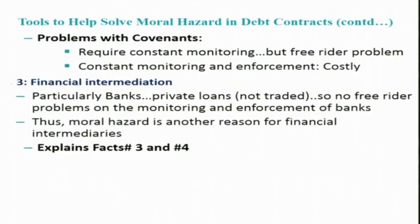Another solution to reduce the moral hazard problem in debt contracts is financial intermediation. As discussed, debt contracts involve lots of covenants and require constant monitoring. In the case of the equity market, it is difficult for each and every shareholder to monitor how managers are doing. Even those interested in monitoring face a free rider problem — those who do the monitoring have less incentive to do so because others simply free ride on the outcome of their monitoring efforts.